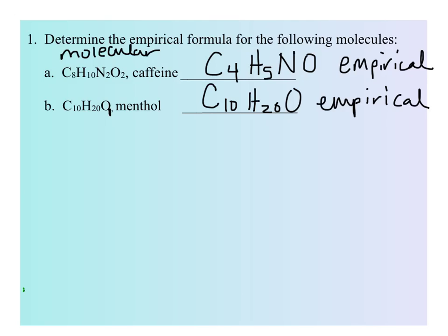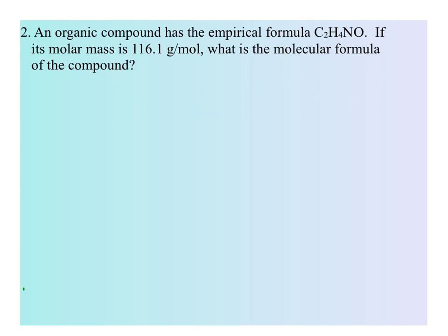In the word problems that we're going to be looking at, we're going to try to go from the empirical to the molecular by determining a number that we can multiply the subscripts by. In this first example, we have a compound with an empirical formula that has been given, and we're told that the molar mass for the compound is 116.1 grams per mole. Using that information, we'd like to come up with the molecular formula. So we need to compare the molar masses of the empirical and the molecular formulas to find a number to multiply our subscripts by.